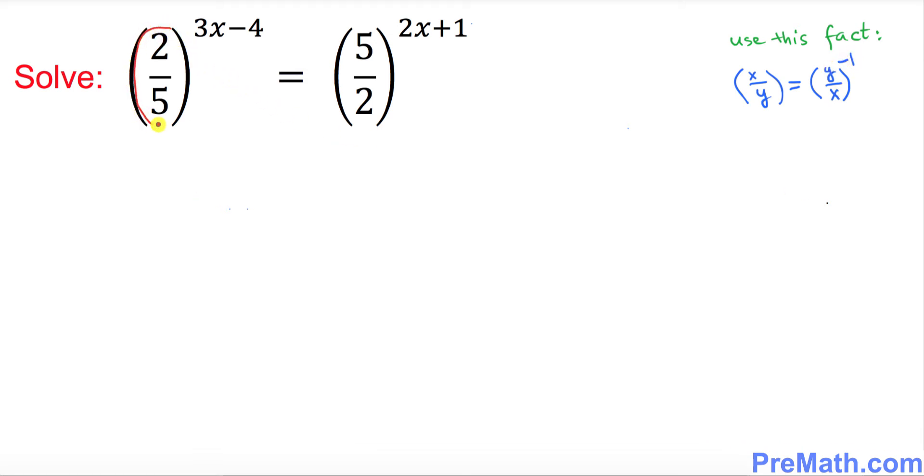Likewise, what I'm going to do over here: look at this base 2 over 5. I want you to write it down somewhere here: 2 over 5. If you want to flip it over, put the reciprocal 5 over 2, you must put a negative 1 on the top power.